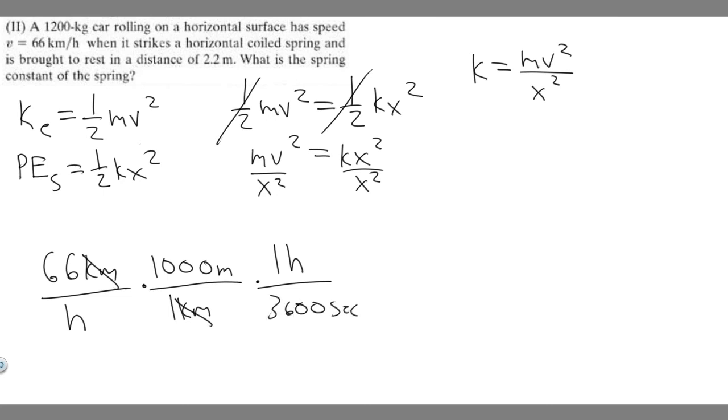Because there's 60 seconds in a minute, 60 minutes in an hour, that gets rid of that. If you do 66 times 1,000 and multiply by 1 over 3,600, you get 18.33. This would be meters per second. Now we have it in the correct units, so we can just plug in.